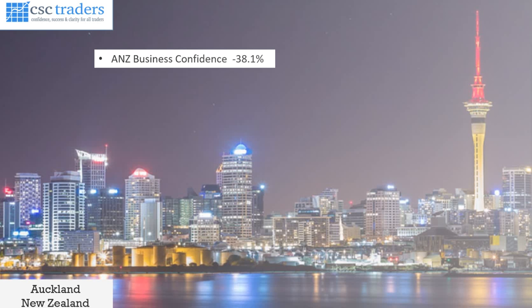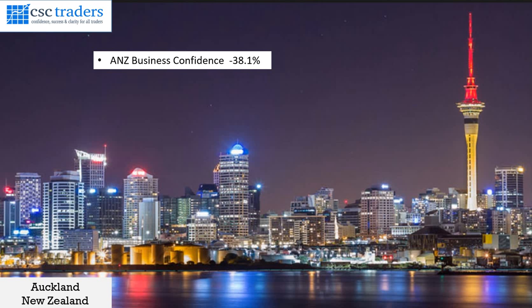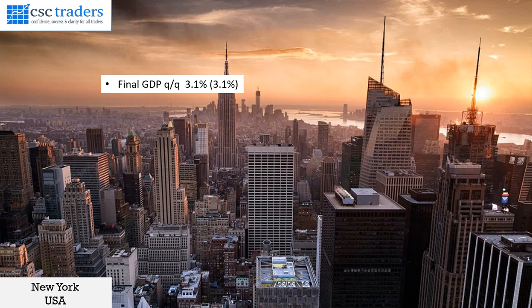Let's have a look at what's happened in the markets yesterday. We had data come out from New Zealand. We saw the ANZ business confidence number coming in at minus 38.1%. The Kiwi dollar yesterday continued to rise against the U.S. dollar. The other data came in from the U.S. — the GDP number came in on forecast at 3.1%.